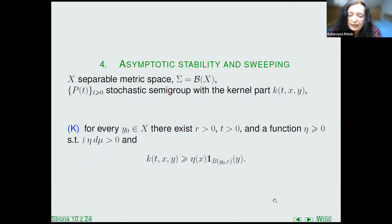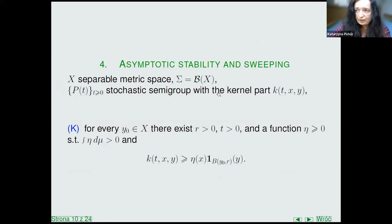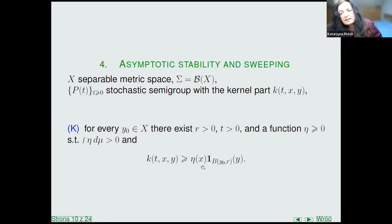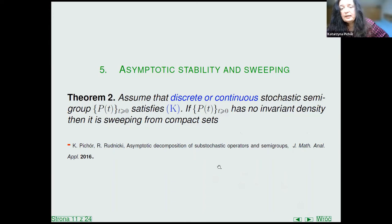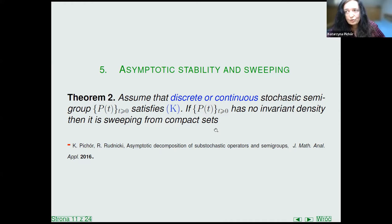Another very important condition that our semigroups might satisfy is condition K. We say that a stochastic semigroup satisfies condition K if it is partially integral, and if the kernel is not only non-negative but also, for every point, is estimated from below by such a factor. We have the following theorem: if our stochastic semigroup is discrete or continuous, and if it satisfies condition K, and if this semigroup has no invariant density, then it is sweeping from all compact sets.